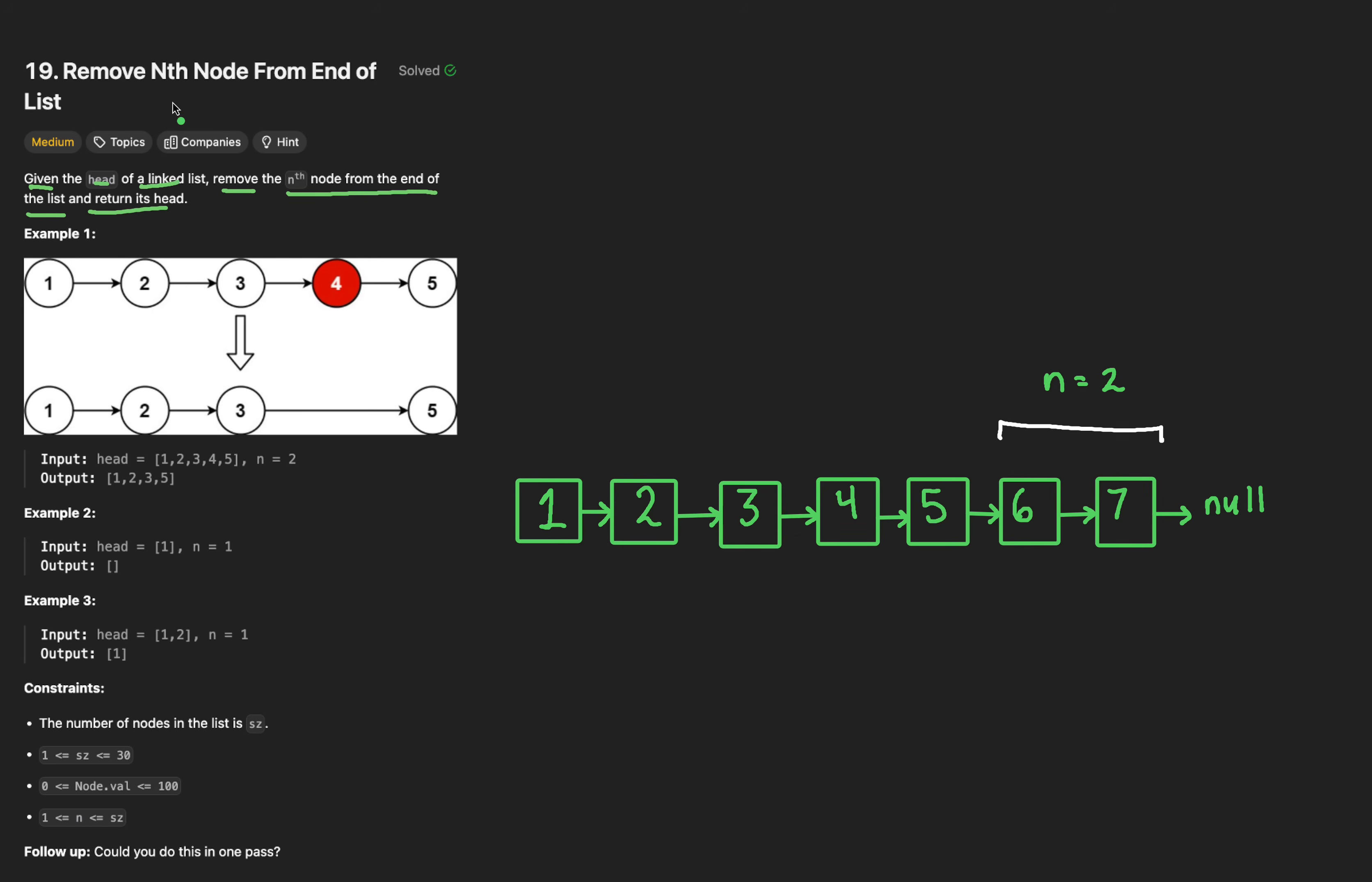Now, to get to node 5, from left to right, how many nodes must we traverse? Well, it would be 5, right? We know this is correct, because if we have a length of 7 nodes, then 7 minus 2 is indeed 5. 5 iterations.